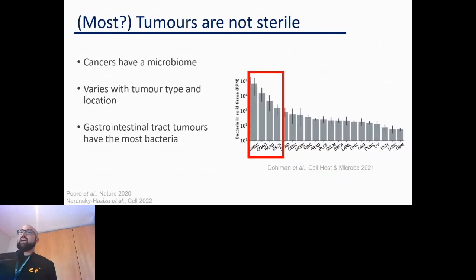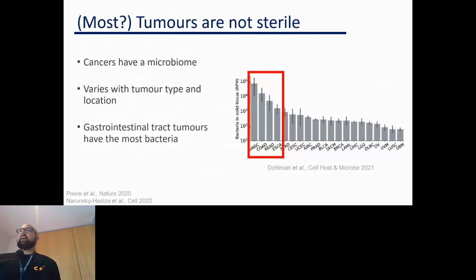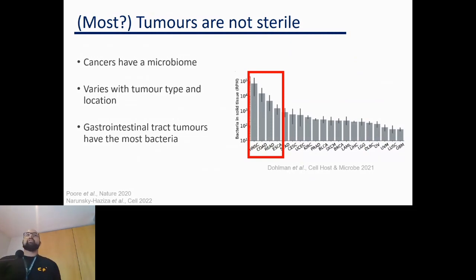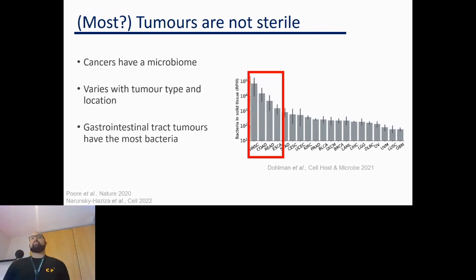There's been an absolute explosion of research into cancer microbiome research over the last few years. It's reasonably well established that most types of cancer probably have a microbiome, but in particular cancers of the gastrointestinal tract. That slide shows a bunch of different cancer types and the intratumoral bacterial load for each subtype — the red box highlights all the gastrointestinal tract tumors, with head and neck being at the very top of the list.